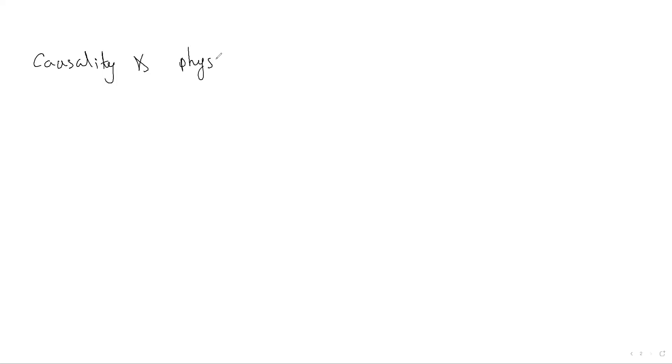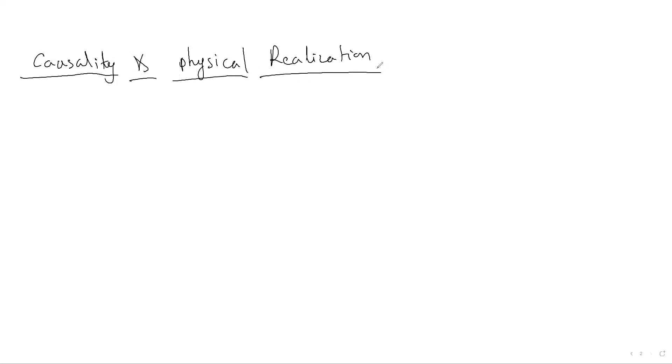Now let's move to a new topic. It is not too important but it is in the syllabus, so let me give the main points. The topic is causality of a signal or a causal system — the condition for how we can practically implement or physically realize a causal system.